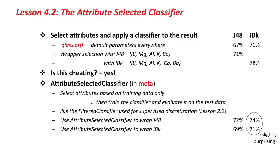This is just what the attribute selected classifier does. Remember the filtered classifier we used for supervised discretization? The attribute selected classifier is the analogous thing for attribute selection. It selects attributes based on the training data only, even if we're within a cross-validation, and then it trains the classifier on the training data only, and then evaluates the whole thing on the test data.